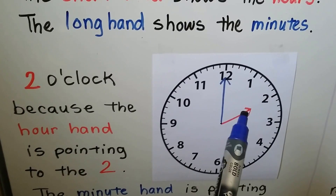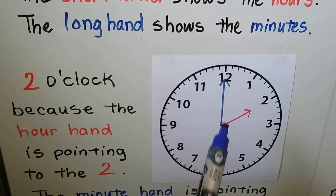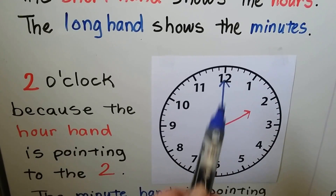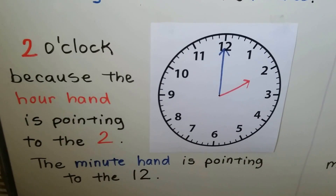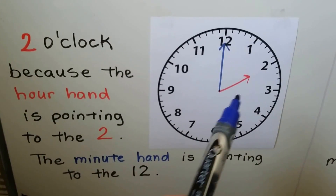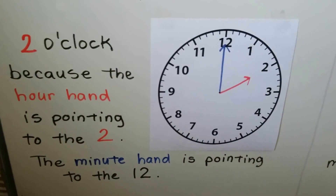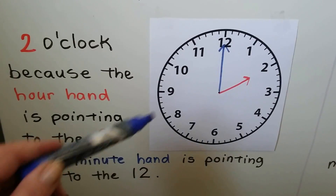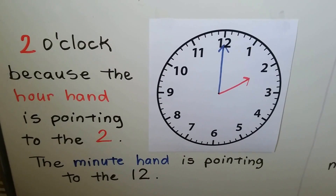Here we have the short hand showing the hours and the long hand showing the minutes. This is 2 o'clock because the hour hand is pointing to the 2. The minute hand is pointing to the 12, so it's 2 o'clock.